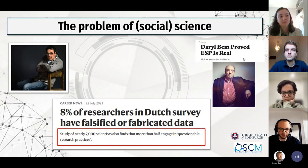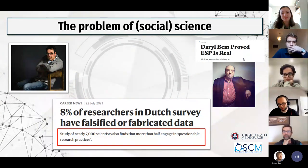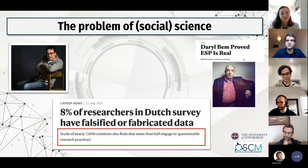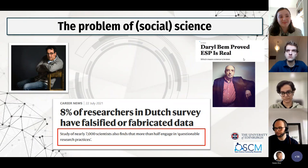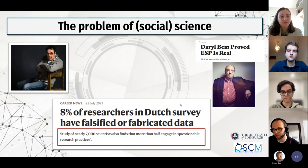Daryl Bem actually didn't fabricate or falsify data. He used what was common practice at that time. As one audience member suggested: he analyzed the data in multiple ways and chose the way consistent with the story he liked. So he engaged in questionable research practices — for example, reporting only a subset of experiments where it worked, excluding or including participants depending on whether results went the way he liked, and many other things.